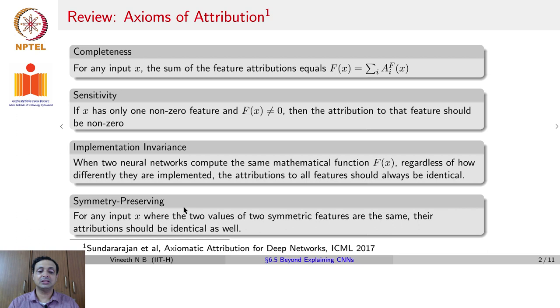Another axiom states about the symmetry preservation of the attribution method, which states that for any input x, where the two values of two symmetric features are the same, their attributions should be identical as well. By symmetric features, we mean features that can be swapped, and the neural network output will still remain the same.